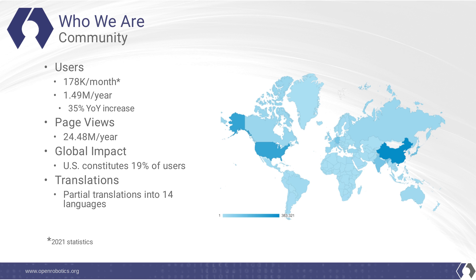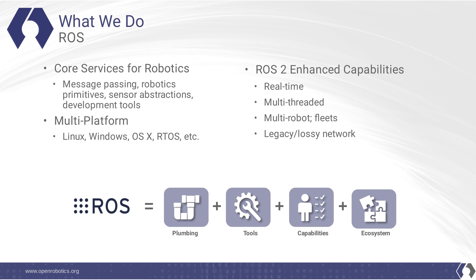We have a very global impact — the United States, for example, where ROS originated, is only 90% of users. ROS provides core services for robotics, including facilities such as message passing, robotics primitives, sensor abstractions, and development tools such as visualization tools and debugging tools. It's multi-platform, working on the major platforms such as Linux, Windows, and macOS, but it also works on several real-time operating systems and embedded operating systems.